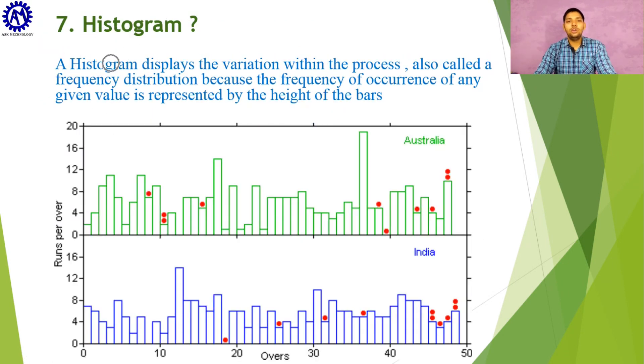At last, let us discuss the histogram. A histogram shows the variation within the process and is also known as frequency distribution, in which we identify frequency by the height of the bar. For example, we can see a histogram of India and Australia is given here, in which the x-axis shows overs and the y-axis shows runs per over. Falling of wickets are also shown here in red dots. Bigger the bar, more the runs are scored in that over.